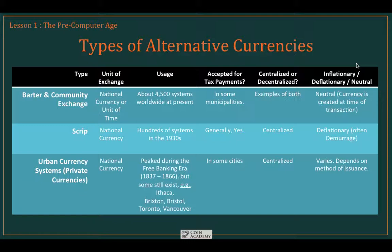Scrip has largely fallen by the wayside, but any time there's a significant dip in a national currency due to a financial crisis, we see scrip arrive and pop up again. Urban currency systems are actually private currencies. These peaked during the free banking era in the mid-19th century, but remarkably some still exist and remain vital. Cities including Ithaca, New York; Brixton and Bristol in the UK; and Toronto and Vancouver in Canada all have private urban currency systems where the value is pegged against national currency and is sometimes used even for tax payments within those city boundaries.